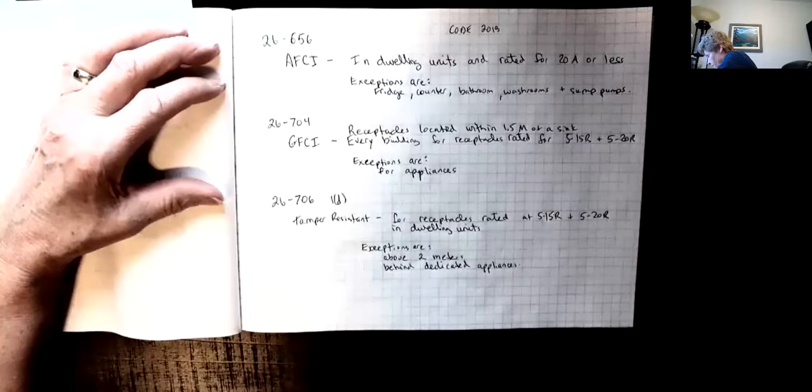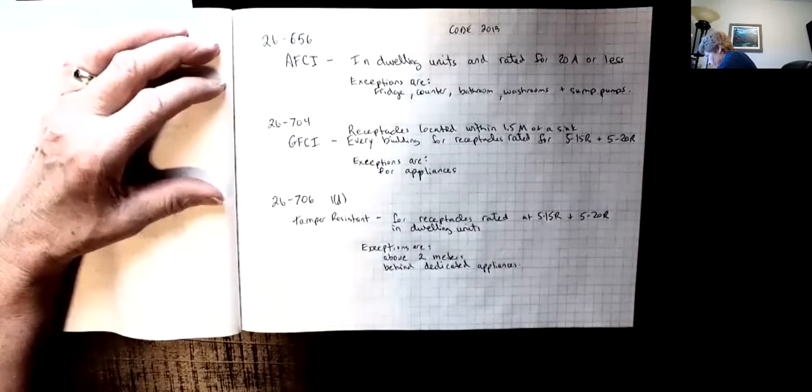26706-1D speaks to receptacles in dwelling units that must be tamper resistant and these are applied to 5-15Rs and 5-20R receptacles and the exceptions for this is receptacles that are above 2 meters or behind dedicated appliances.